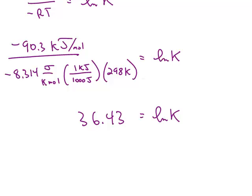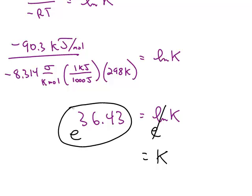If I want K by itself, I have to get rid of the natural log, so I use E as the base. And so K, the equilibrium constant, is E to the positive 36, which is going to be a very large number, 6 times 10 to the 15th.